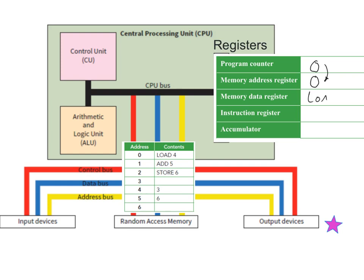The instruction 'load 4' is placed into the memory data register. This is the end of the first fetch cycle — we've fetched the data from RAM and put it into the register in the CPU. This now gets transferred to the instruction register: 'load 4'. We've completed the fetch cycle and now need to decode the instruction. This is the decode part of the fetch-decode-execute cycle — the CPU needs to load the number three from memory location four into the CPU.